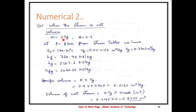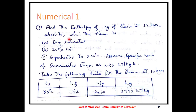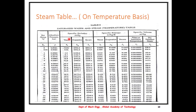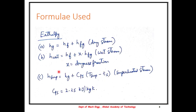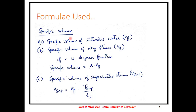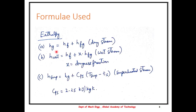This is the method to solve any numerical on steam properties. Always first write the values from the steam tables, and before that ensure the units of pressure are in bar. Write down all property values from the steam tables, then start solving. It is also important to thoroughly remember the formulas for enthalpy, specific volume, and entropy for all cases — dry, wet, and superheated. In case entropy needs to be found, the formula remains the same except H is replaced by S.